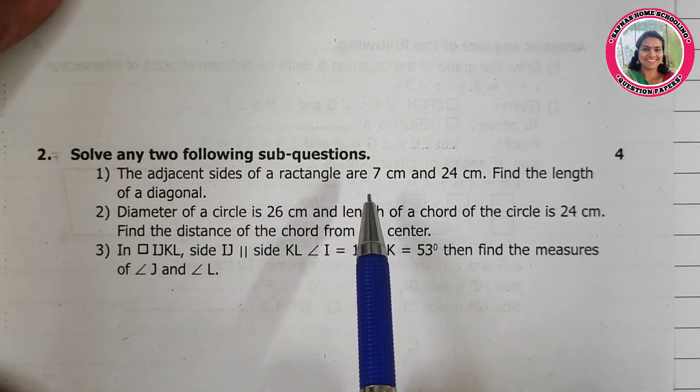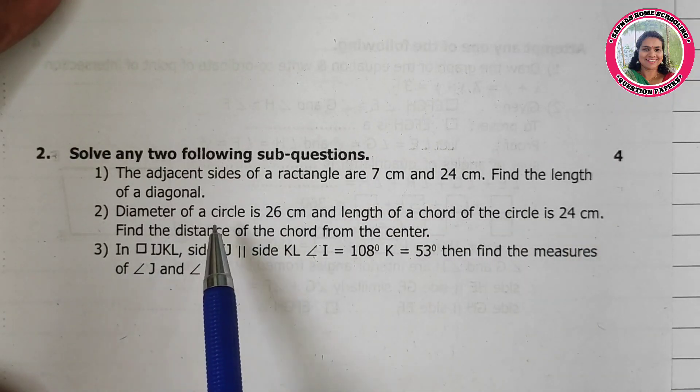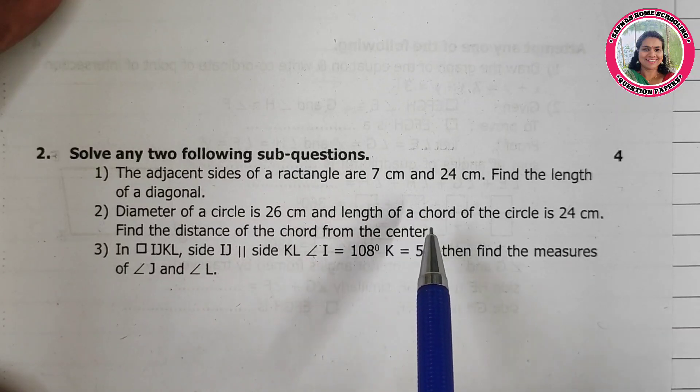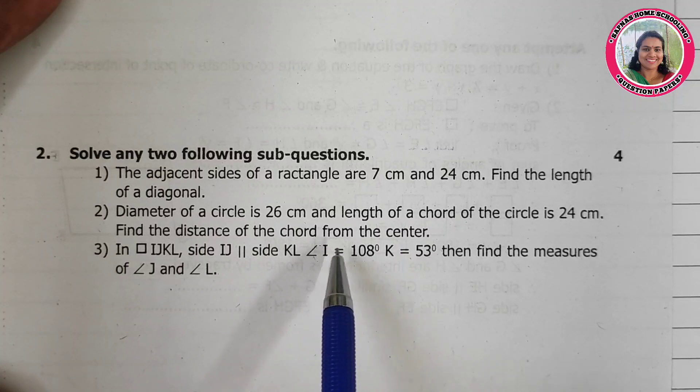The adjacent sides of a rectangle are 7 cm and 24 cm. Find the length of the diagonal. Diameter of a circle is 26 cm and length of a chord of the circle is 24 cm. Find the distance of the chord from the center.